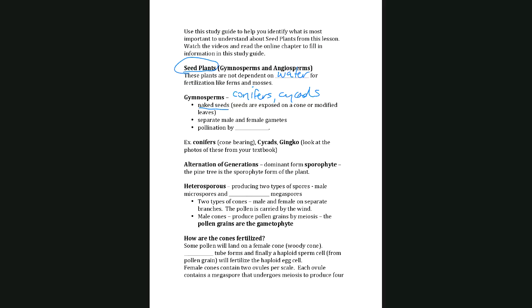Gymnosperms have different male and female gametes, and it is wind that pollinates them — unlike most angiosperms, which are pollinated by insects, birds, or bats.